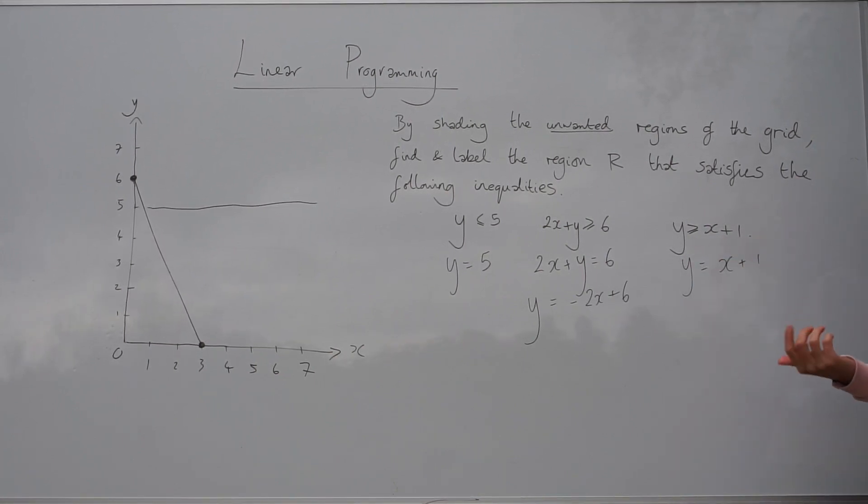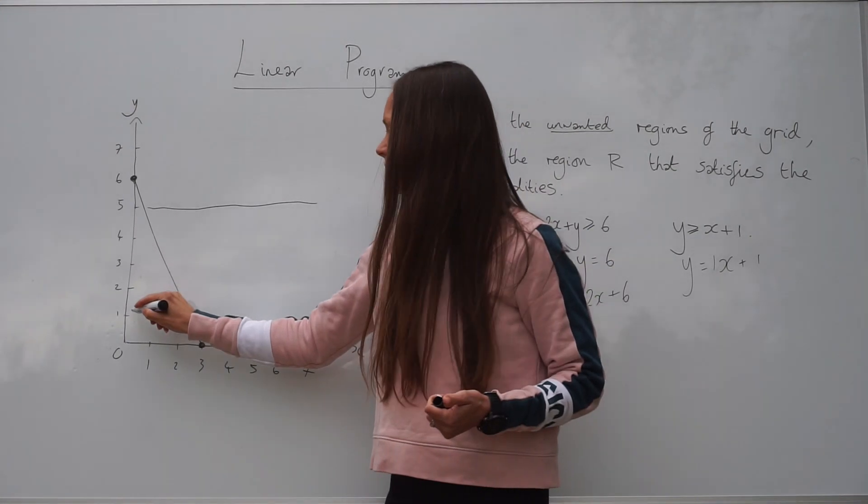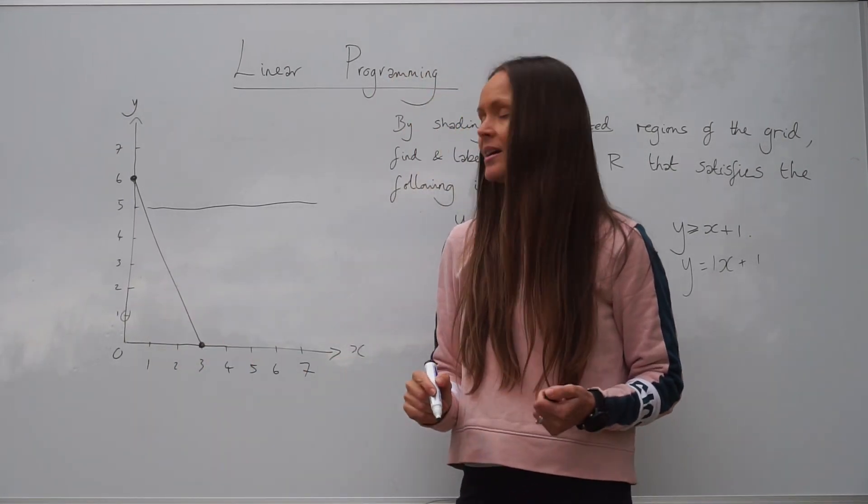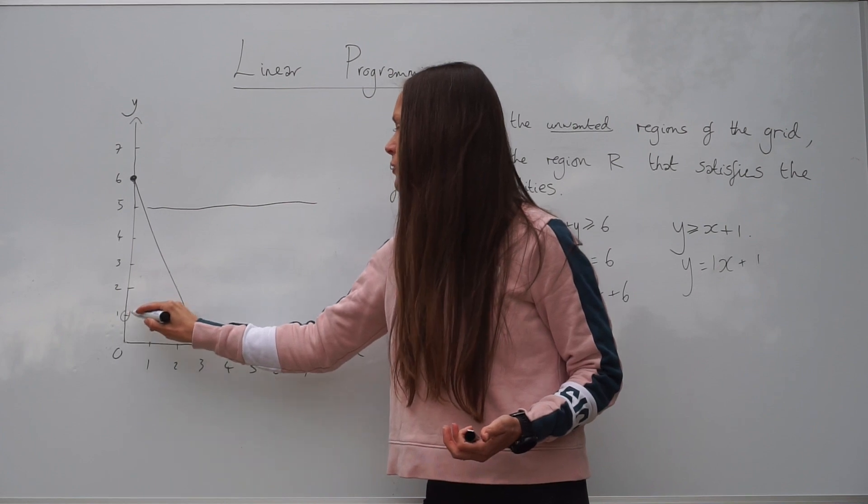So if we look at the gradient of this straight line, it would be positive 1, because we have 1x here. And the y-intercept is also positive 1. So if I draw that line on the grid, I know it crosses the y-axis at positive 1. And if the gradient is positive 1, when I go one unit to the right,